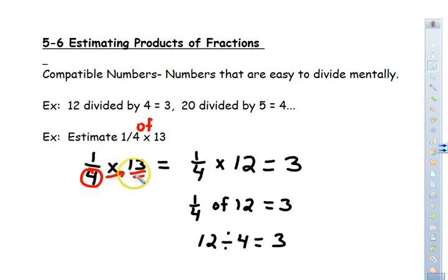So in this case, the most compatible number that's closest to being compatible, I should say, from 13 is 12. The next most compatible number would be the next multiple from 12 that 4 would be, which would be 16. And 13 is closer to 12. So again, remember, we are estimating. We're just trying to be close. So 1/4 times 12 does equal 3.